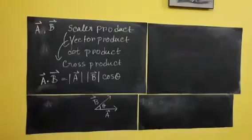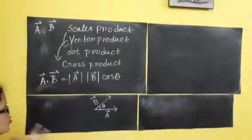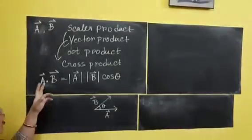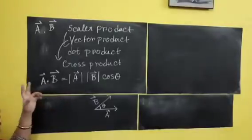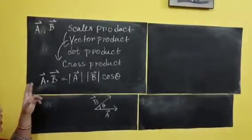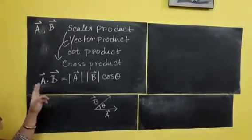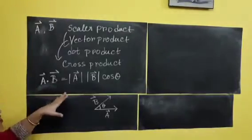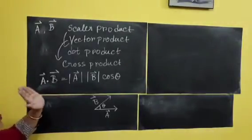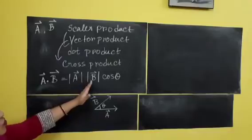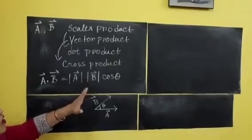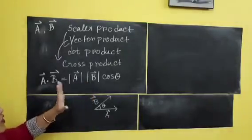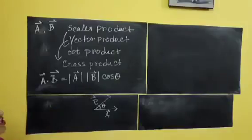Now if I want to multiply these two vectors — if I do A dot B — then according to the formula, that is equal to the magnitude of A, magnitude of B, cos theta.